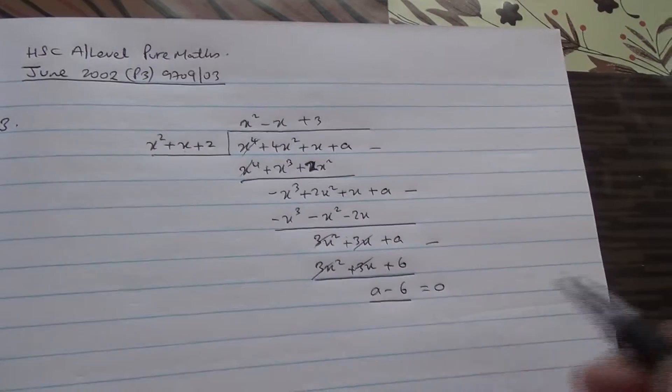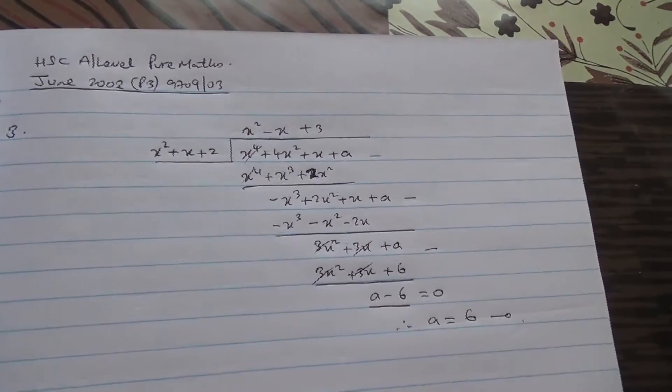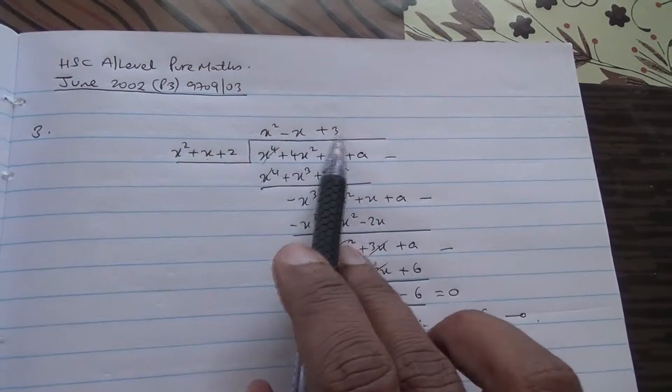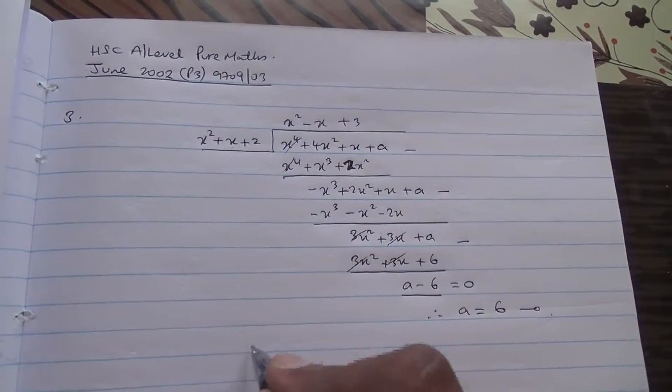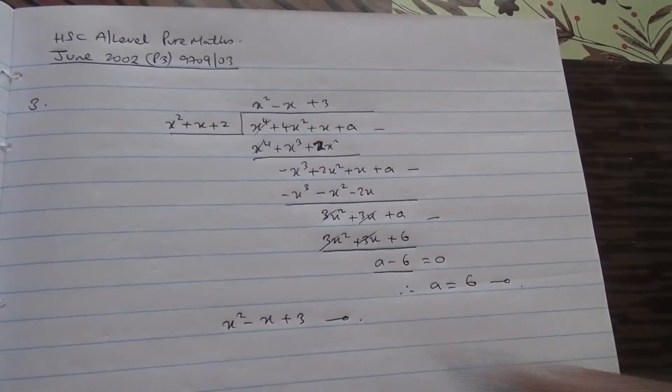Because it's a factor, therefore it is equal to 0. Hence, we have A is equal to 6. That's the first part of the question. The other quadratic factor is x squared minus x plus 3. And that's your second answer.